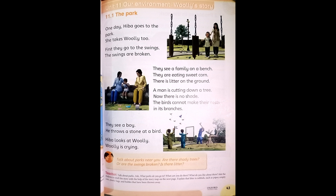There is litter on the ground. You can see from the picture that there is rubbish. Litter is rubbish such as paper, cans, and bottles left lying in an open or public place.